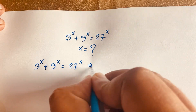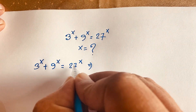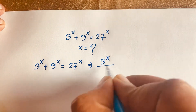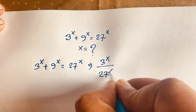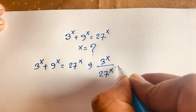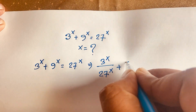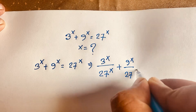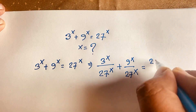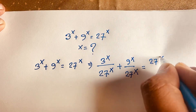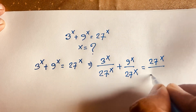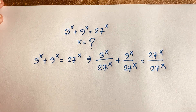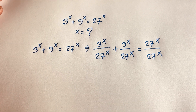I divide both sides by 27 to the power x. So it will be 3 to the power x over 27 to the power x, plus 9 to the power x over 27 to the power x, is equal to 27 to the power x over 27 to the power x.